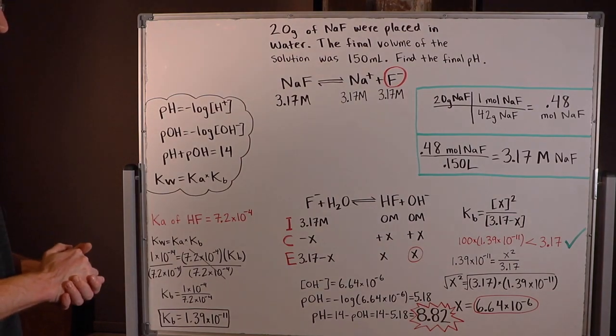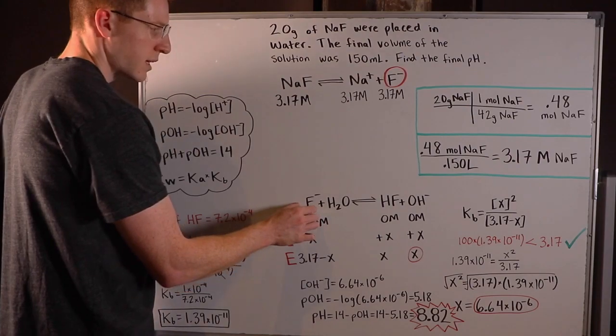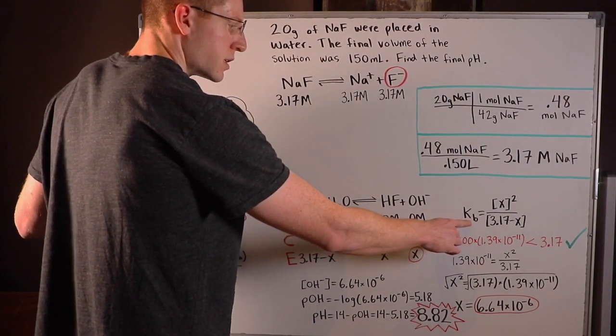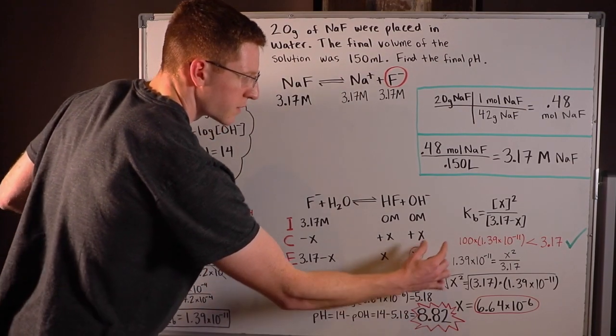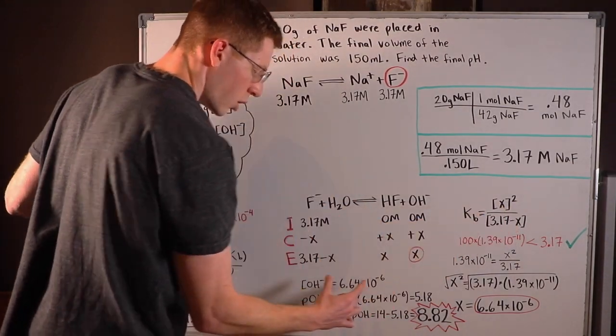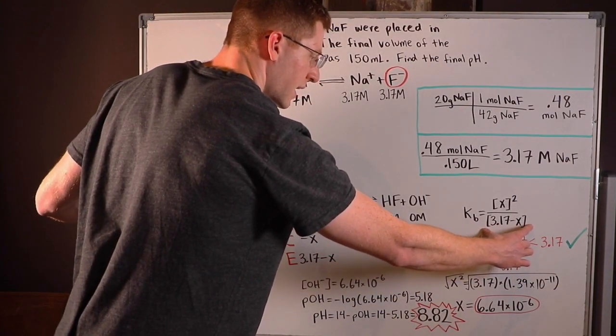So now I was ready to set up my equilibrium expression. So I knew that F- was a base, so I would need a Kb. So I said Kb is equal to the concentration of my products, x times x is x², over the concentration of my reactant, F-, 3.17 - x.